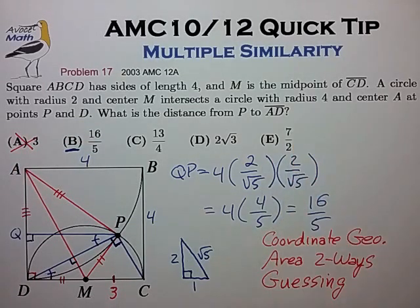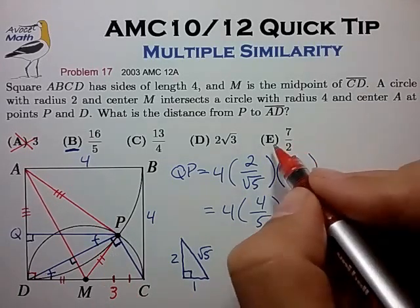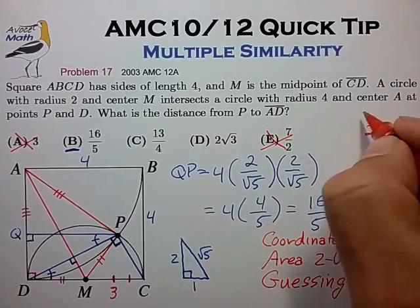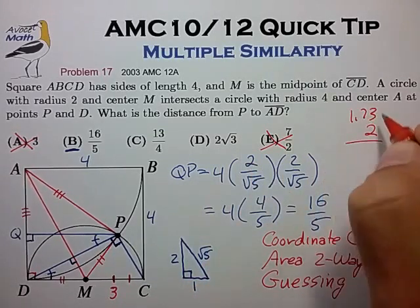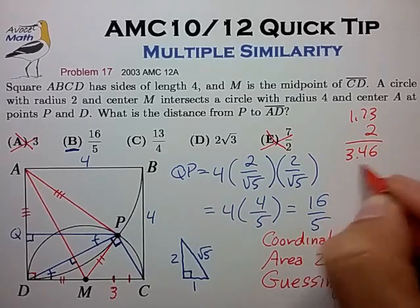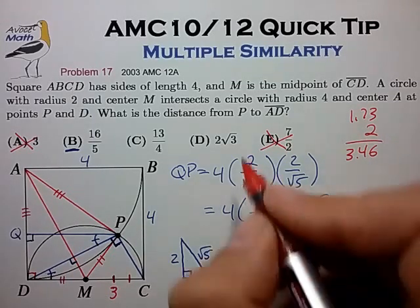So it appears that choice A is a bit too small. Choice E is 7 over 2. That's 3.5. That appears a little bit too big. 2 radical 3. Let's draw that out. 2 times 1.73, that's basically 3.5 again. And that again is too big.